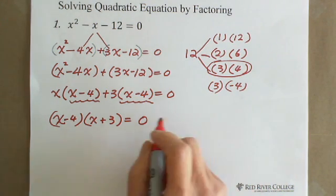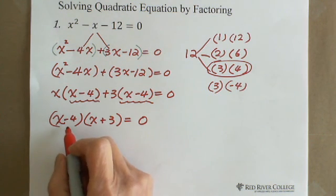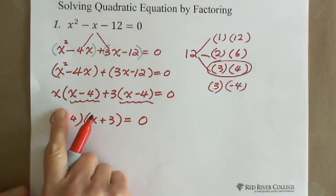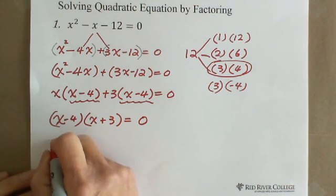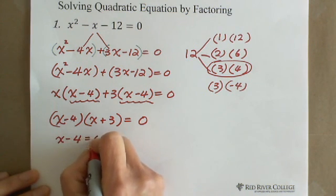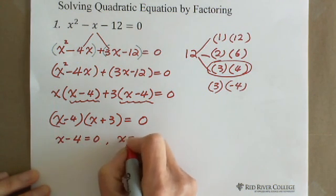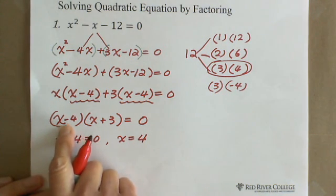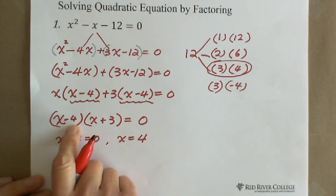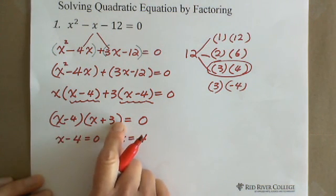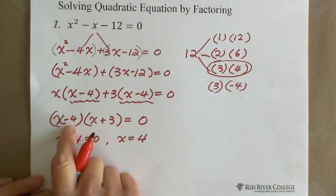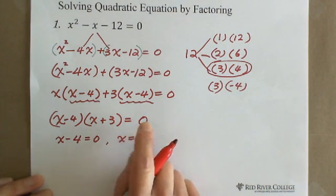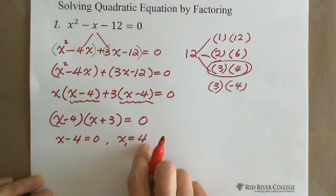After factoring, we have (x minus 4)(x plus 3) equals 0. If x minus 4 equals 0, then x equals 4. We can verify: plug in x equals 4 — 4 minus 4 equals 0, and 0 multiplied by (4 plus 3), which is 7, gives 0 times 7 equals 0. That's true. So x equals 4 is the first solution.